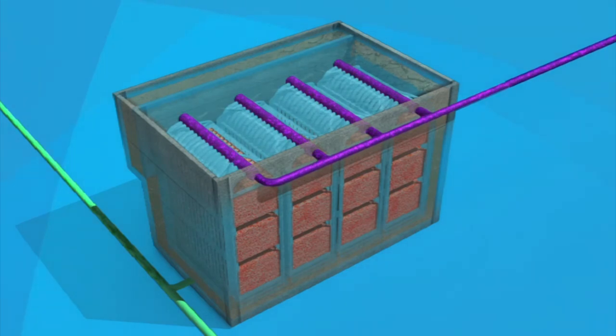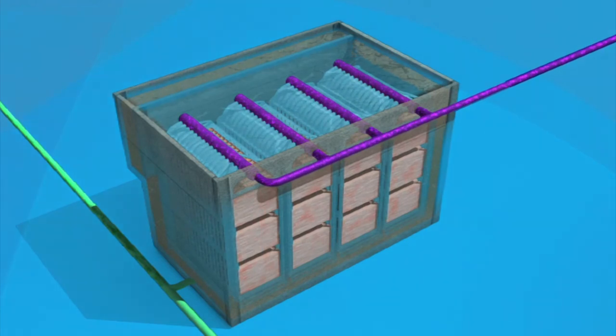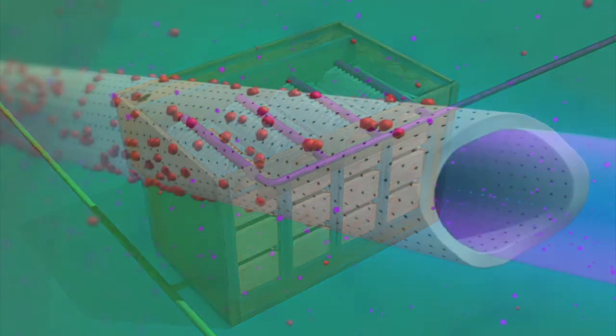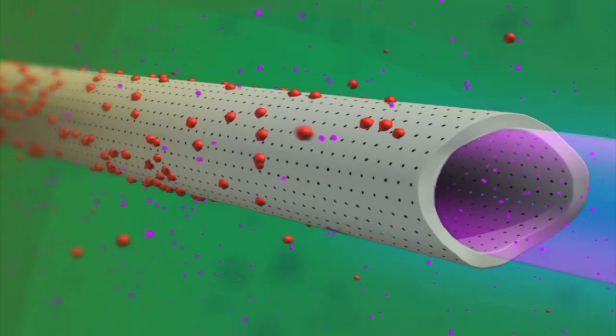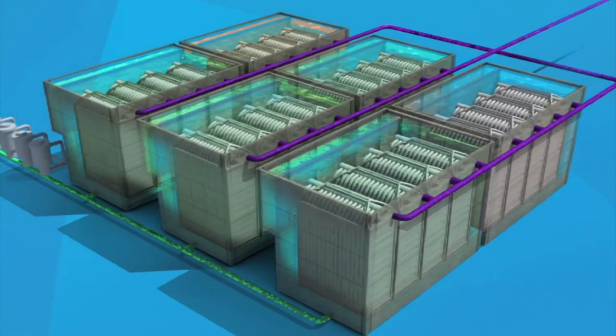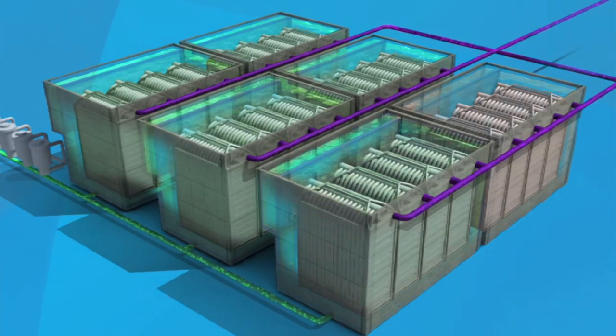Backwashing pushes some of the filtrate through the manifold header into the cassettes and through the membrane pores to dislodge any stuck material. The backwash cycle removes particles blocking the membrane fibers. The backwash cycle occurs every 20 to 30 minutes in one cell at a time to allow the other cells to continue working.